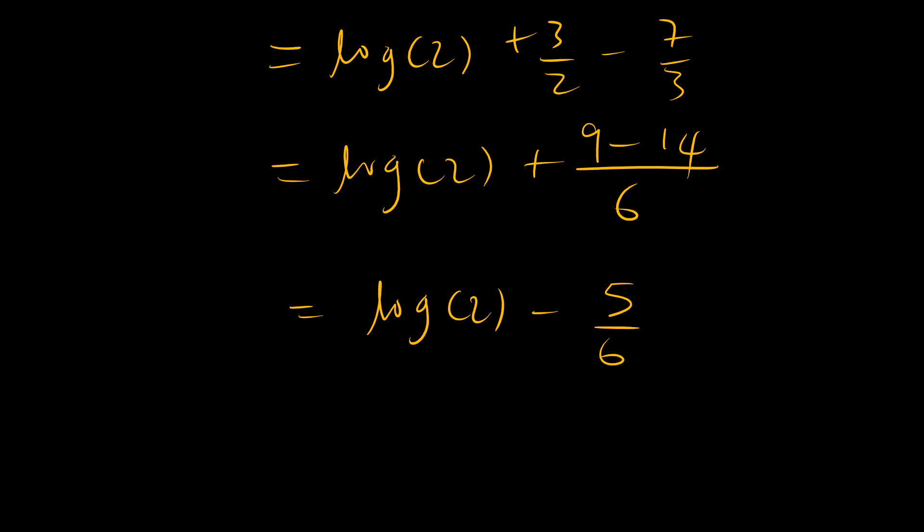Maybe we can simplify it a little bit further. We have natural logarithm of 2 plus 3/2 minus 7/3. Common denominator 6: 6 divided by 2 is 3, that's 9, minus 6 divided by 3 is 2, so 14. Natural logarithm of 2 minus 5/6, and that's a more simplified answer.